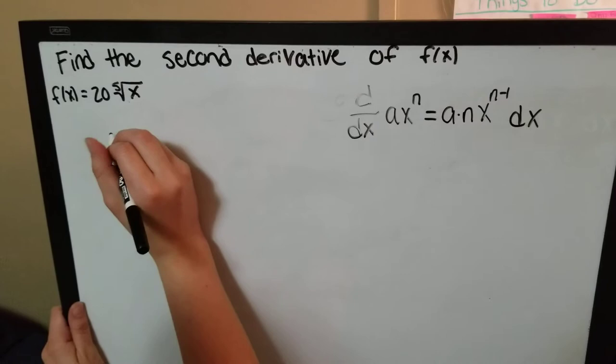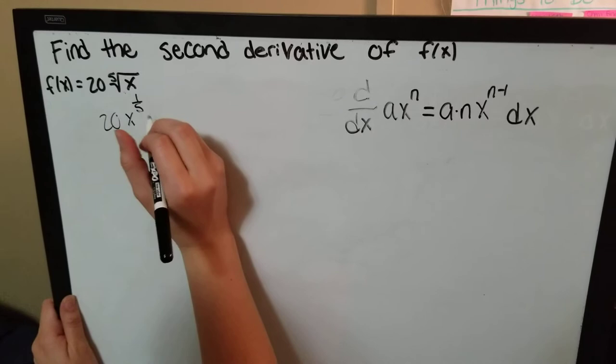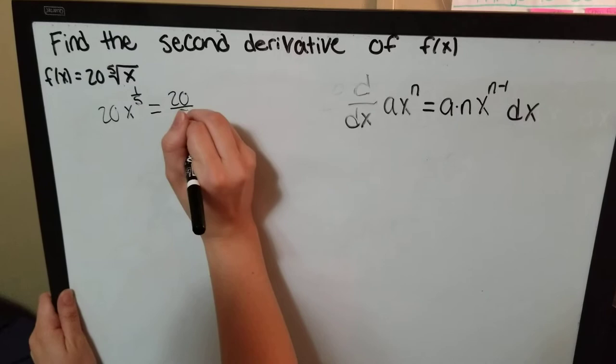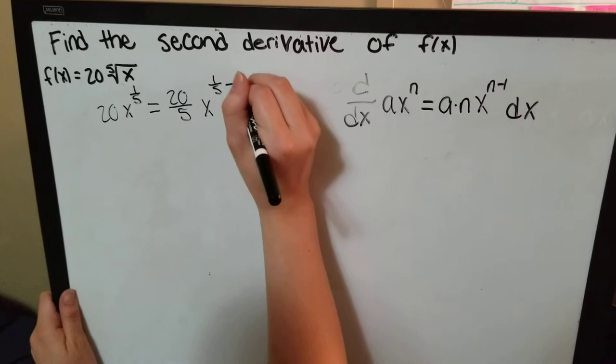By changing the root to a power, it makes it easier to perform the power rule. Multiplying 20 by the power gives us 20 over 5x to the power minus 1, which would be 5 over 5.